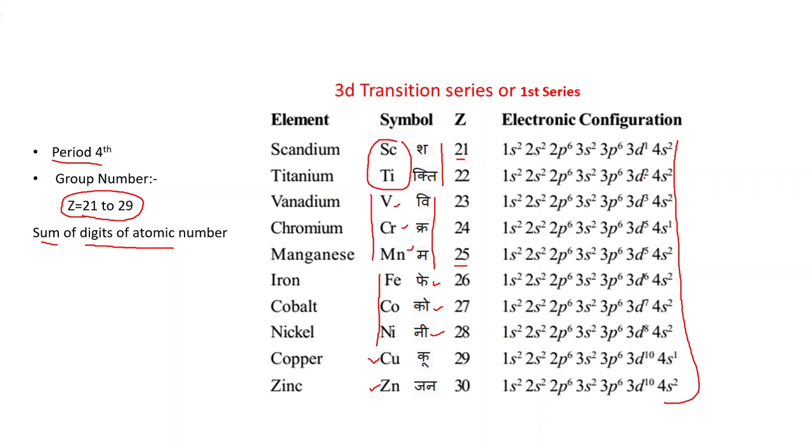If you see these electronic configurations, you can say this is 3d^1 4s^2, 3d^2 4s^2, 3d^3 4s^2. Now see chromium: this is 3d^5 4s^1. Then manganese: 3d^5 4s^2. Again electron enters in D subshell: d^6, d^7, d^8. If you come to copper, this is again 3d^10 4s^1. And last, zinc: 3d^10 4s^2.